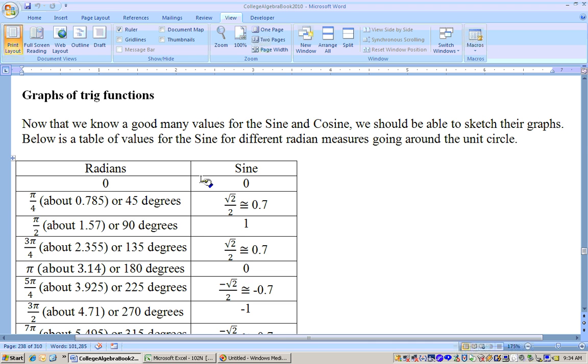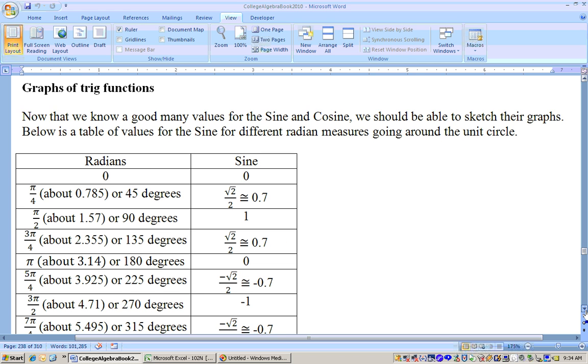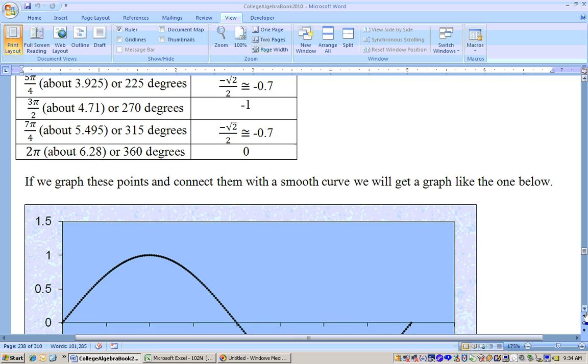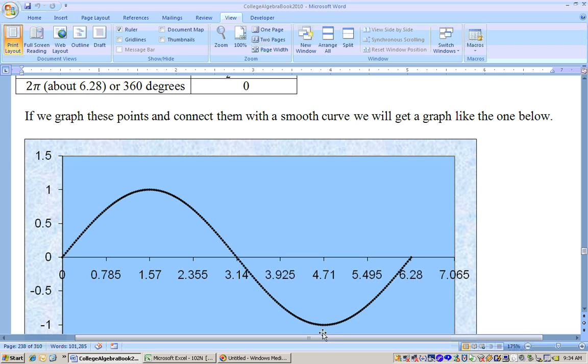Now that we know a good many sine values for different radian measures or degrees going around, for example, we know the sine of 0 is 0, the sine of 45 degrees or pi over 4 radians is square root of 2 over 2 or about 0.7 and so on, then you could plot the points on this and if you connect the points with a curve, you would get something that looks like this and that's called a sine wave.